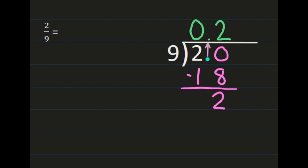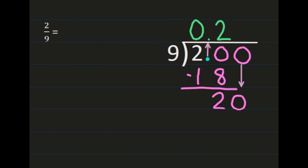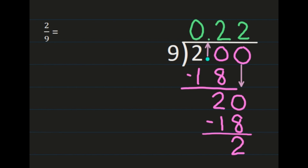So we'll add a 0 and bring it straight down. And if you notice, now we have the same problem that we just worked. We're going to have 20 divided by 9 again. 20 divided by 9 is 2. 2 times 9 is 18. And when we subtract, we're going to get 2 again. So this is going to be a repeating decimal, so we don't need to go any further. We know that 2 ninths is equal to 0.2 repeating, and we're going to show that this is a repeating decimal by putting the line above the 2.